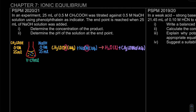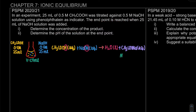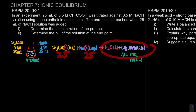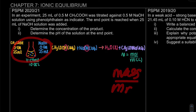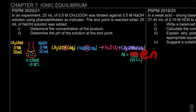The question asks to determine the concentration of the product, which is CH3COONa. Concentration, or molarity (M), equals mol divided by volume in liters. The total volume of the product solution is 50 mL, which is 0.05 L. To find the number of moles, since we don't have mol directly, we use the formula: N = M × V / 1000, where M is molarity and V is volume in mL.